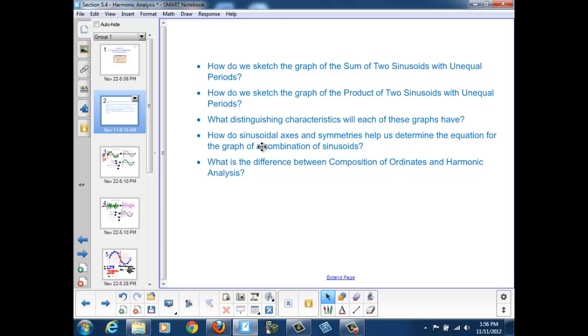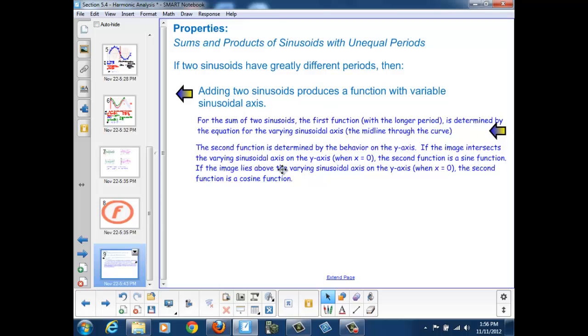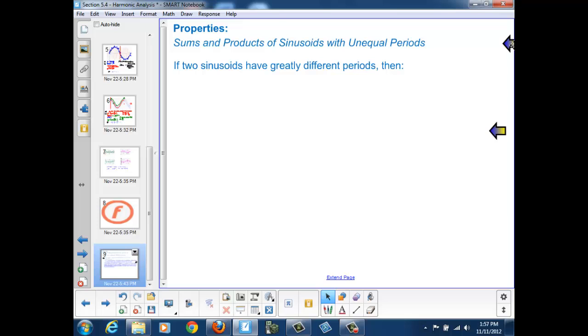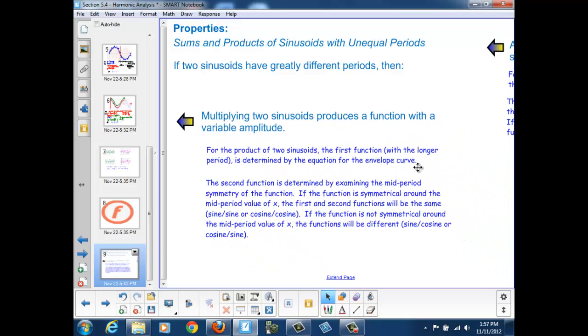How do sinusoidal axes and symmetries help us determine the equation for the graph of a combination of sinusoids? Well, for a sum, we look at the y-axis behavior and the equation for the varying sinusoidal axis. And for a product, we look at the envelope curve behavior and the mid-period symmetry.